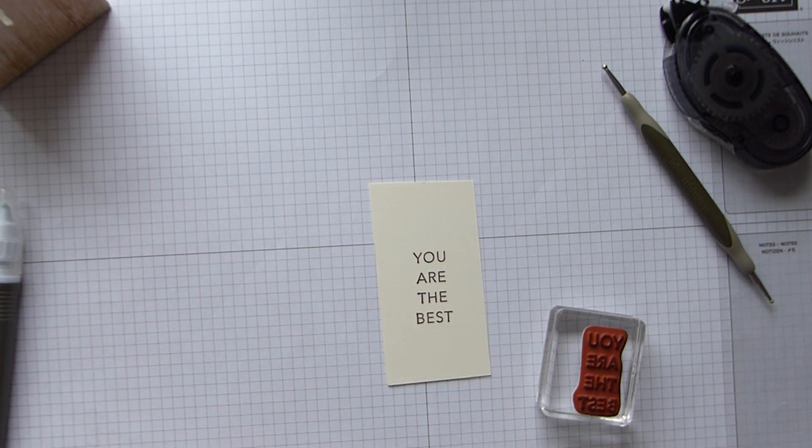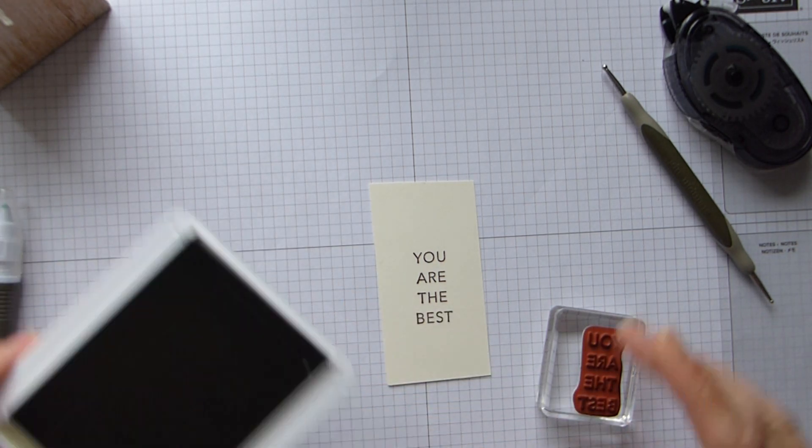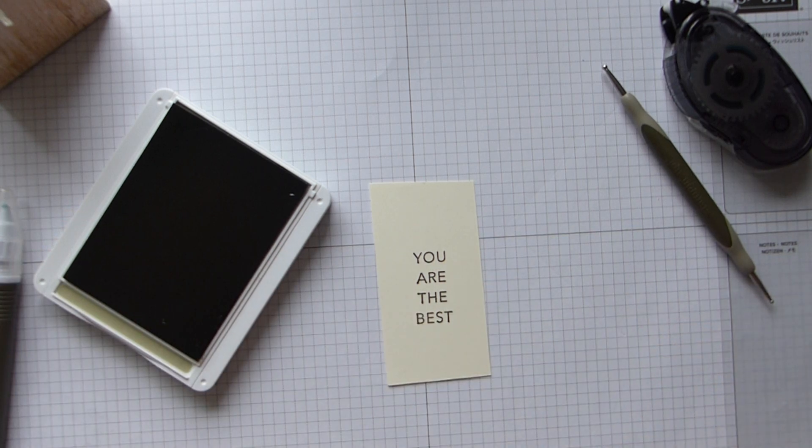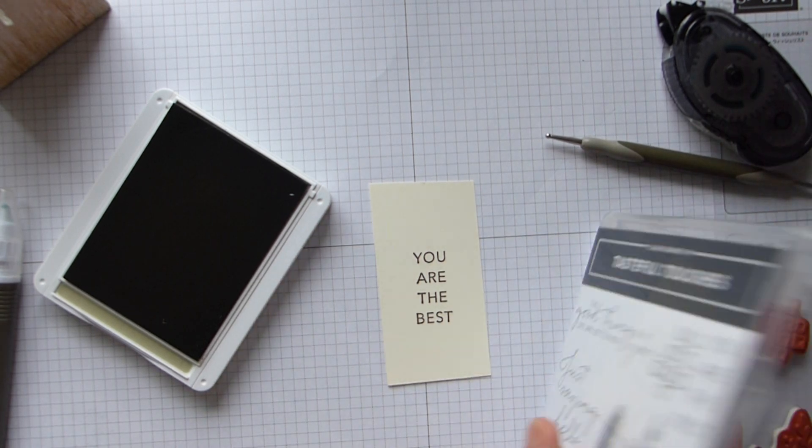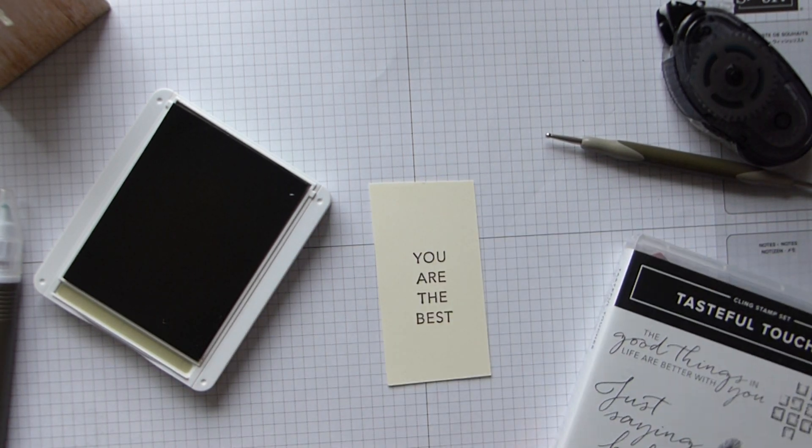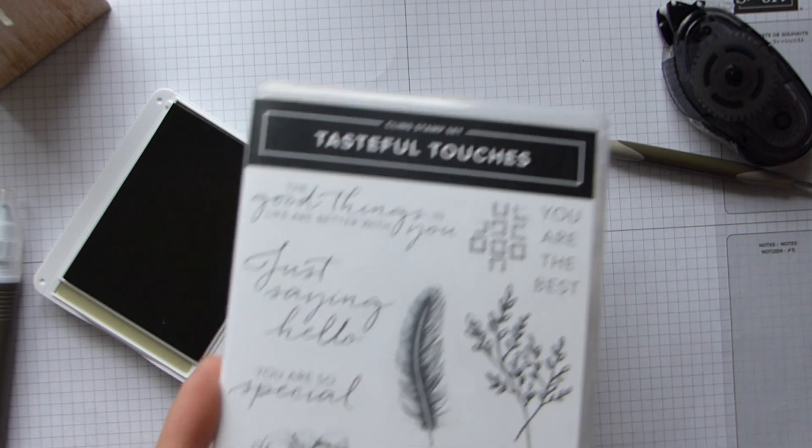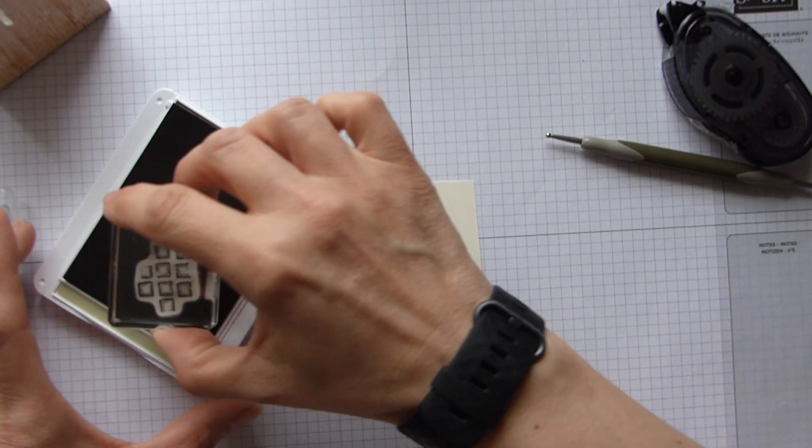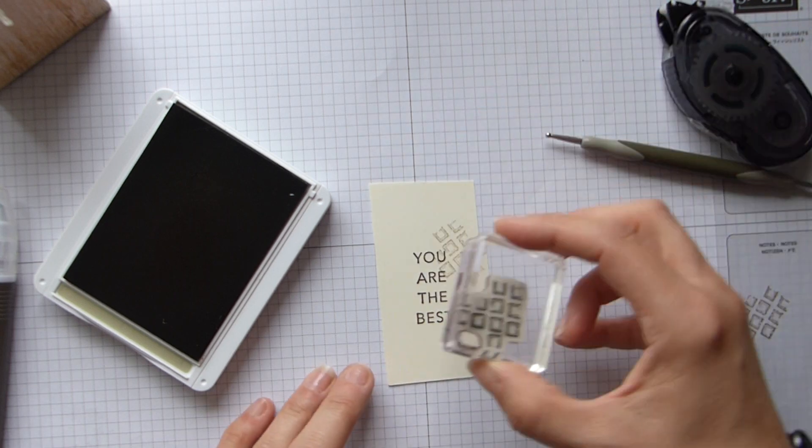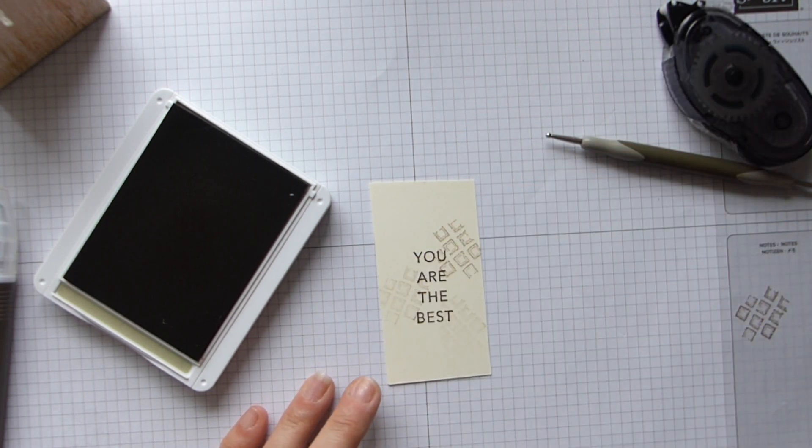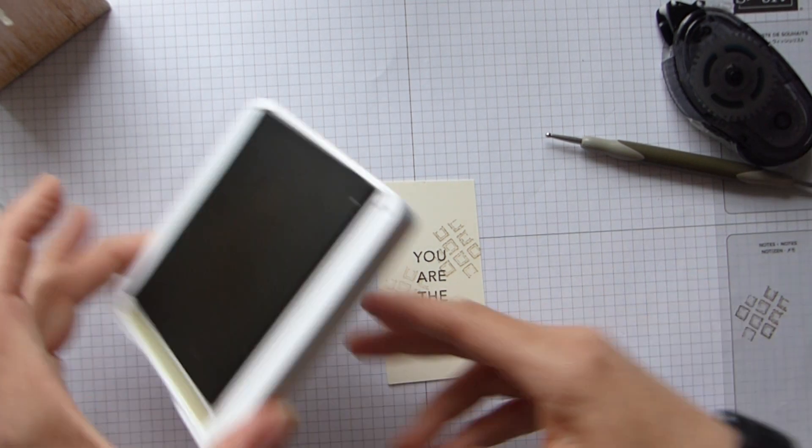And then I've got Crumb Cake here. Just clean that stamp off, and I've just used the squares pattern there, which I'm just going to stamp off and then just sort of add some random bits of stamping there.